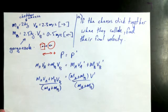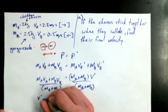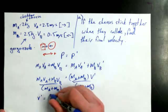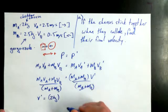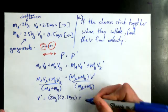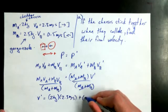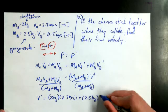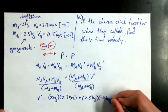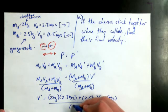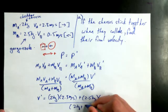Alright, so we've got our V primed equal to, and we'll start plugging in our values. MA was 2 kilograms. VA was 2.3 meters per second. We've defined it as being positive. MB was equal to 2.5 kilograms. But VB was negative 0.5 because it was going to the left. So that's important. And then the denominator, MA plus MB would be 2 kilograms plus 2.5 kilograms.